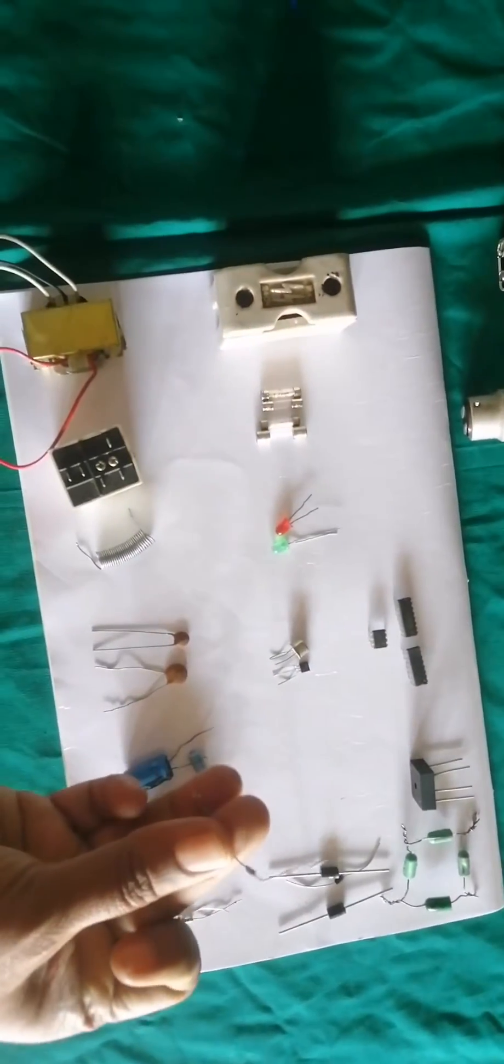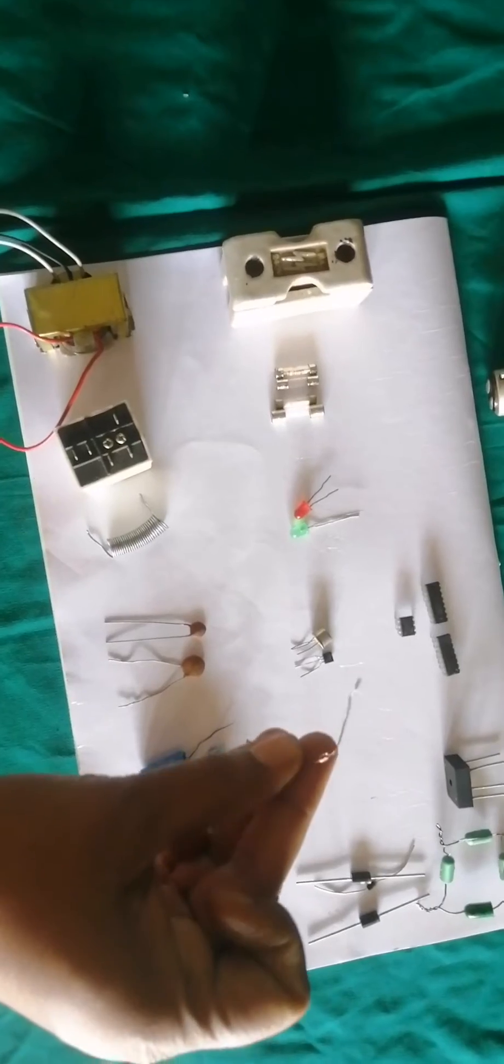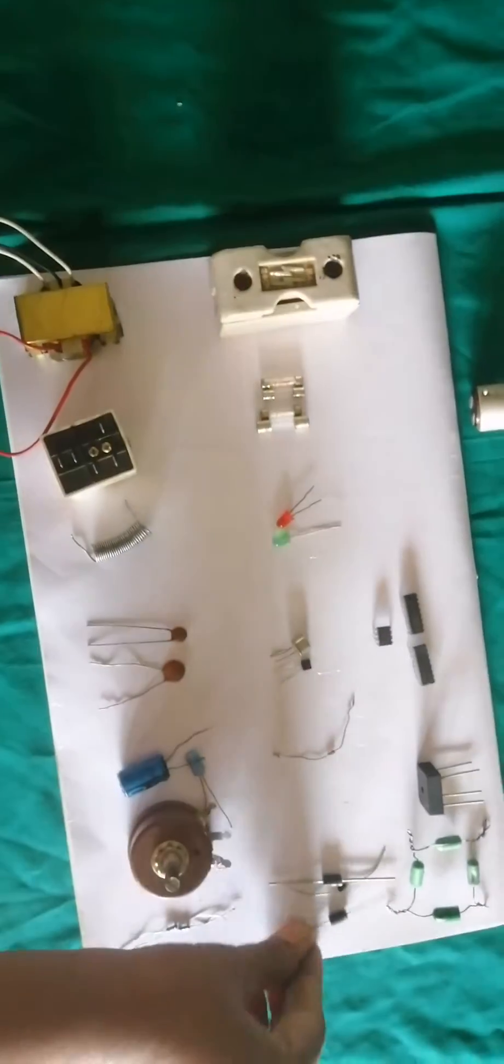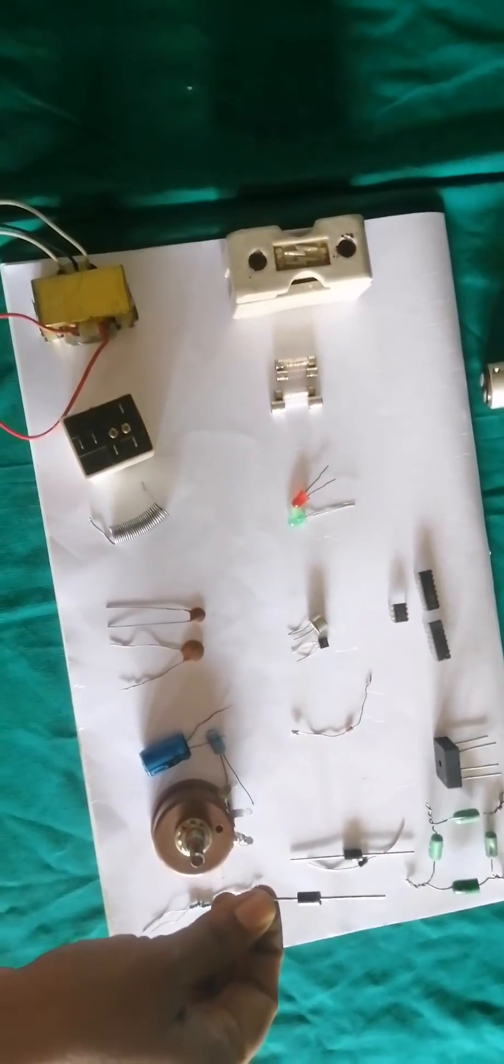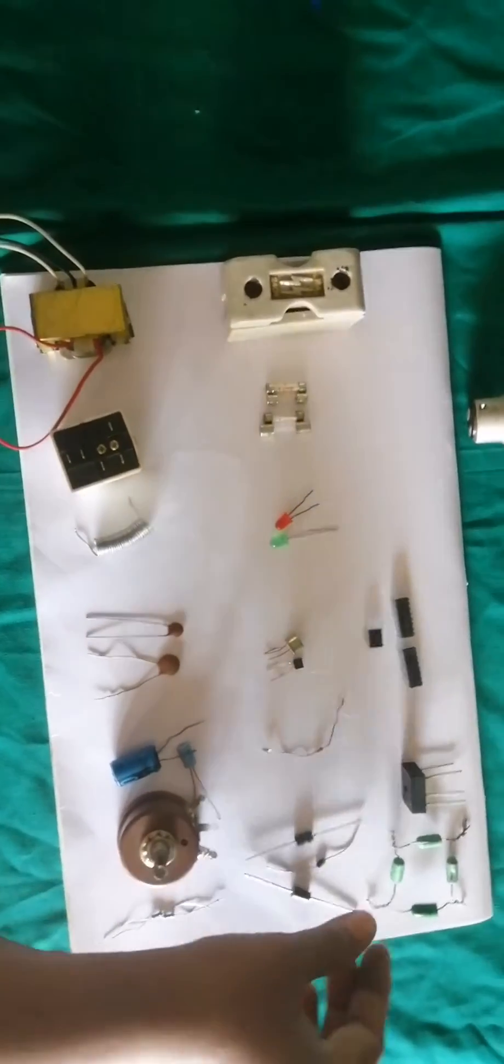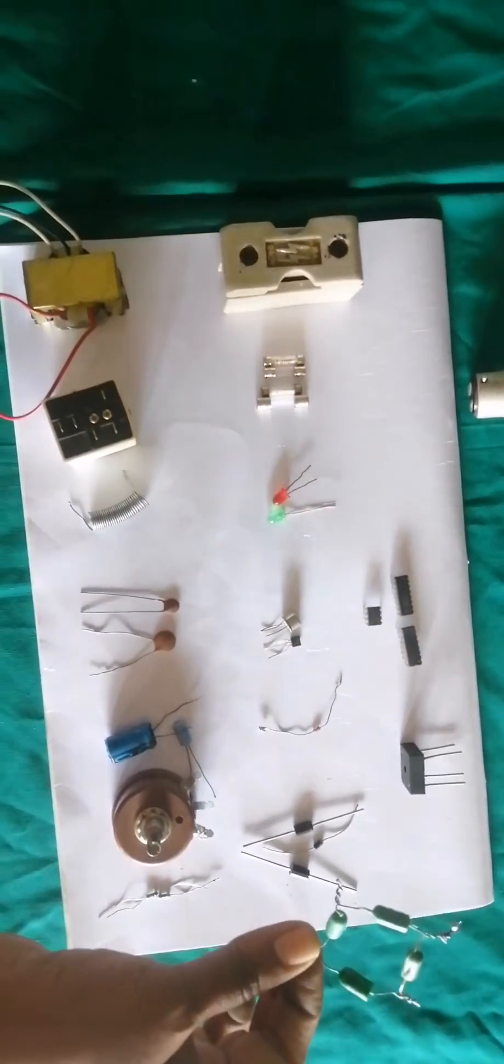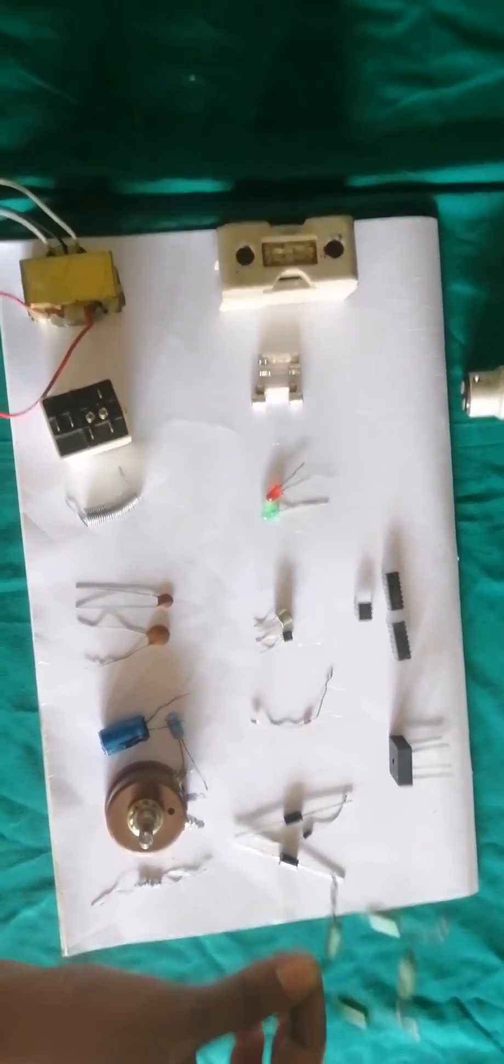This is zener diode. These are basic diodes. Here the four diodes are connected in a bridge fashion, this is a bridge rectifier.